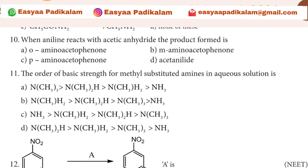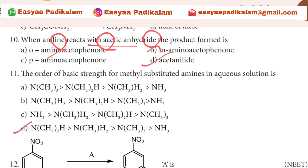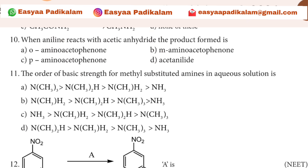Question 10: When aniline reacts with acetic anhydride, the product formed is? Acetic anhydride is acidic; aniline reacts with it. The answer is acetanilide.